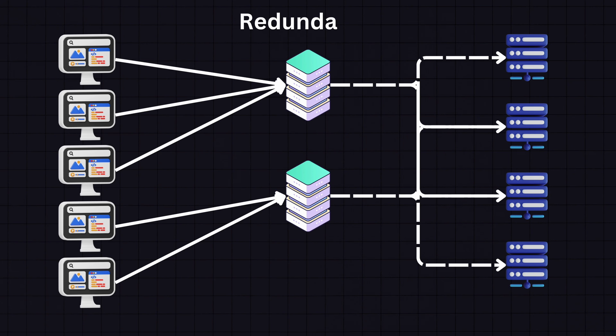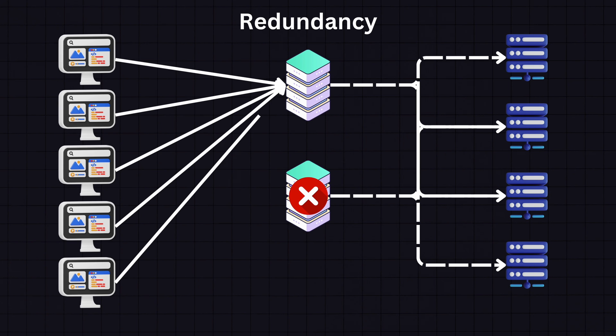The first strategy is implementing redundant load balancing by using more than one load balancer, often in pairs, which is a common approach. If one of them fails, the other one takes over — a method known as failover.